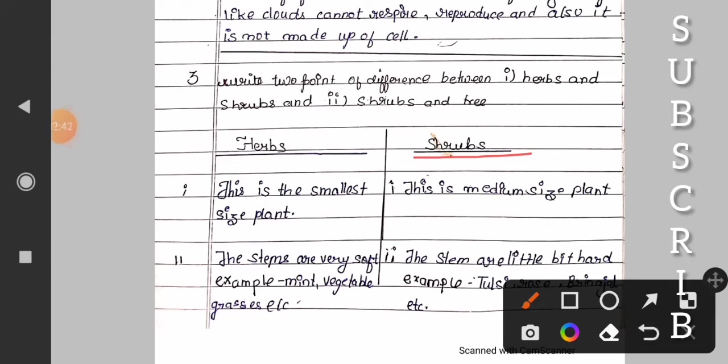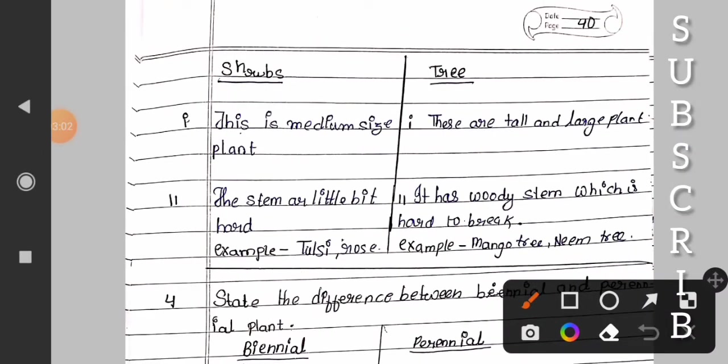Shrubs - it is a medium size plant. The stems are little bit hard. Example: tulsi, rose, brinjal. Trees - these are tall and large plants. It has woody stems which is hard to break. Example: mango tree, neem tree.